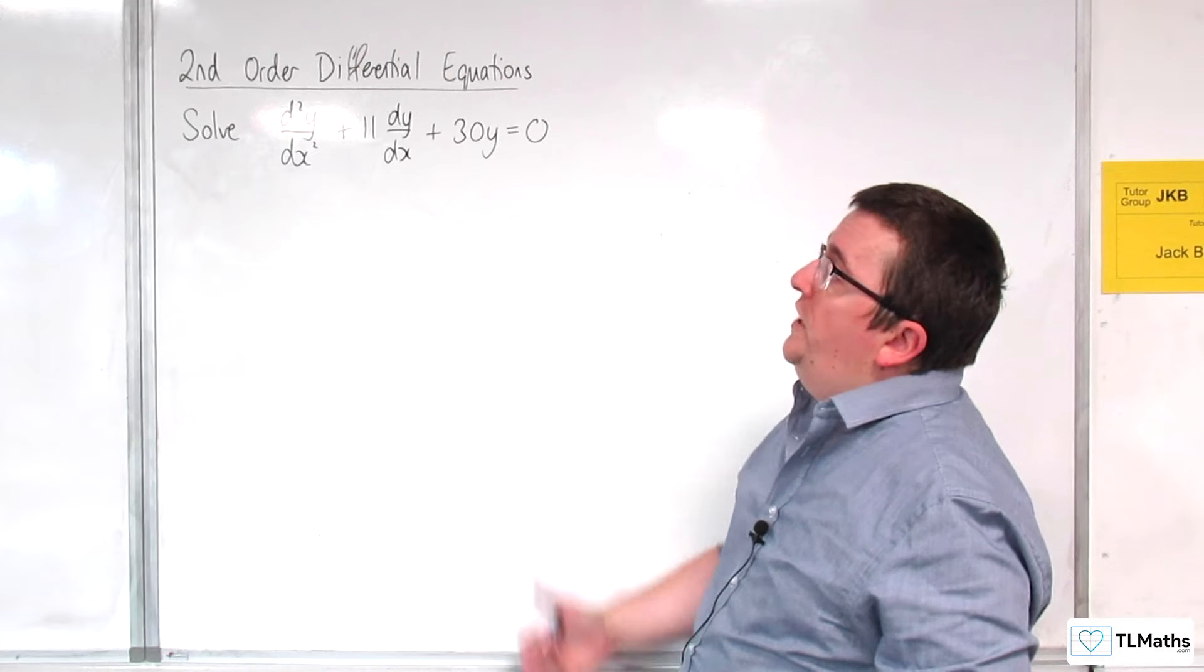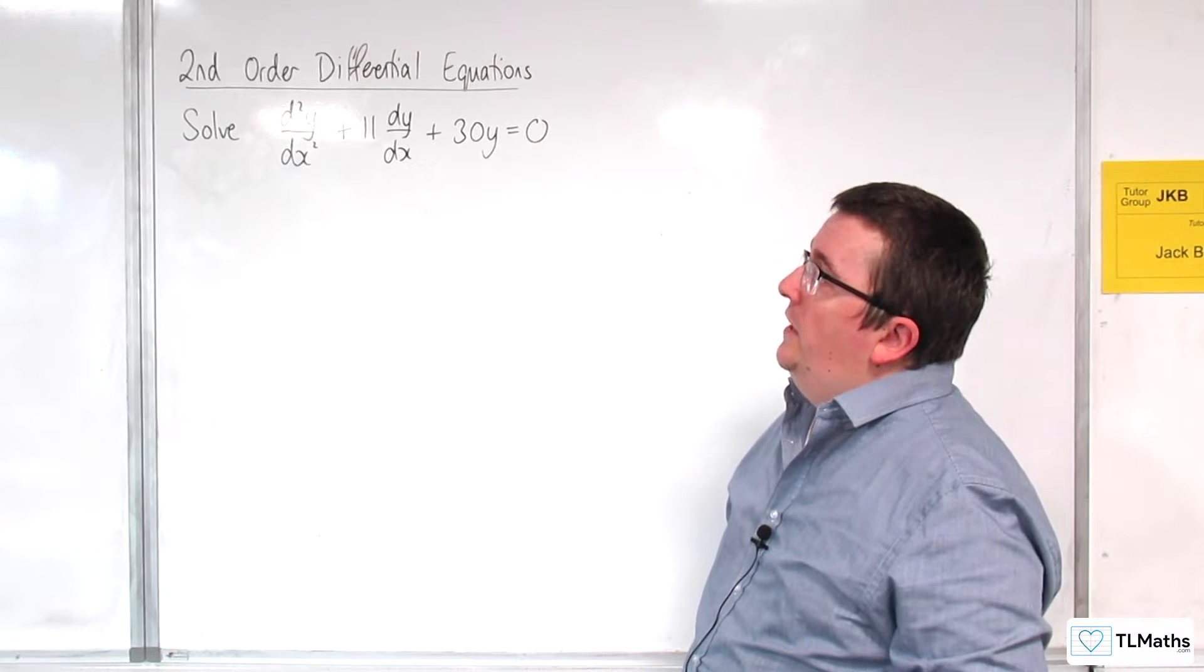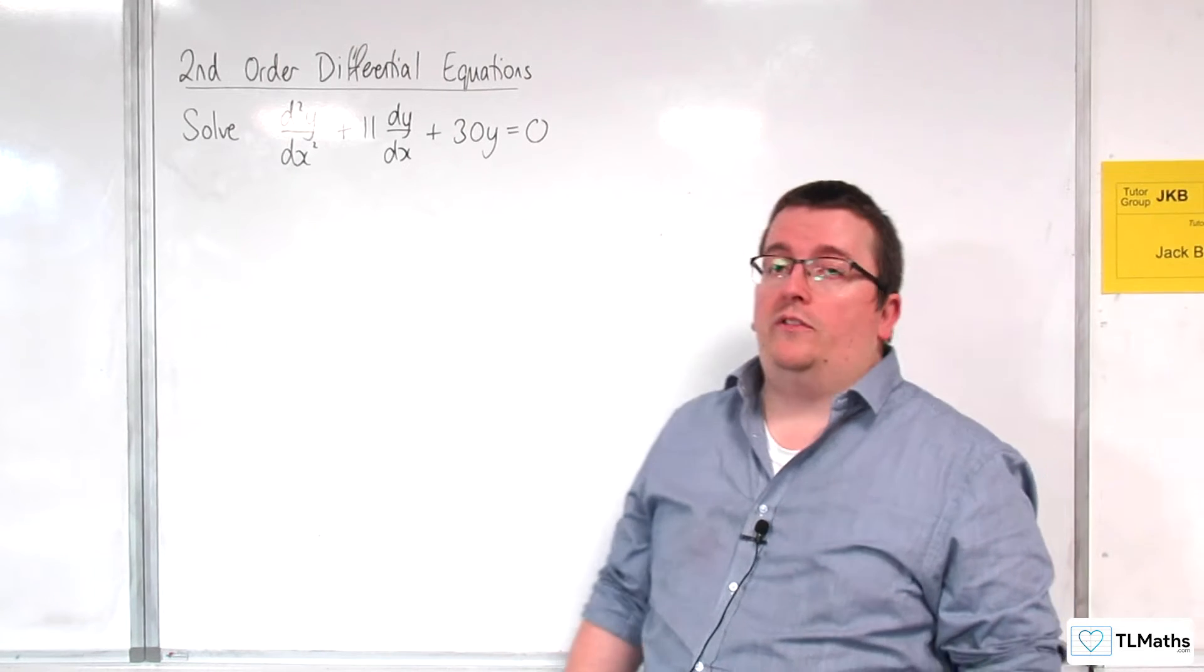In this video we're going to solve d²y/dx² + 11dy/dx + 30y = 0.